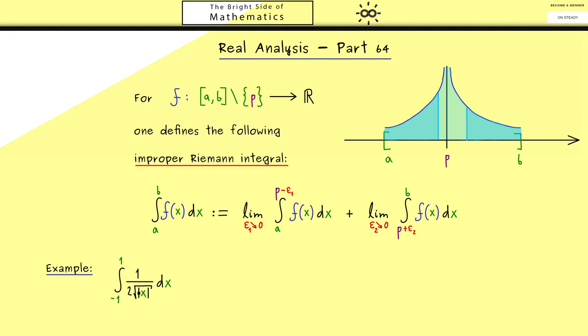So this is a well-defined function on the interval minus 1 to 1 with the exception of the origin, which means the function is not defined at 0. However, maybe the two limits here exist, and then we know the improper Riemann integral also exists.